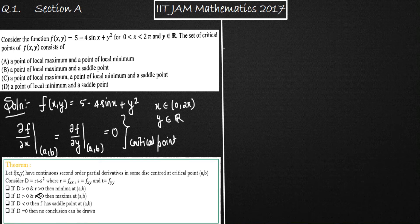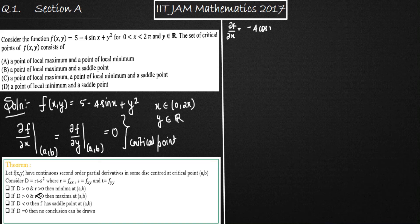We have f(x,y). Firstly I will determine the critical points. So ∂f/∂x = −4cos(x). Now ∂f/∂y = 2y.